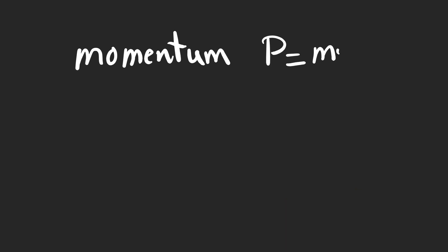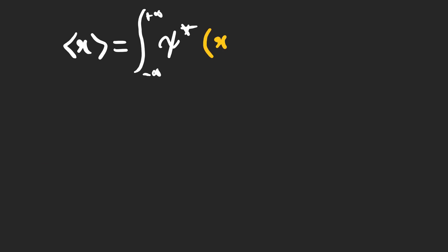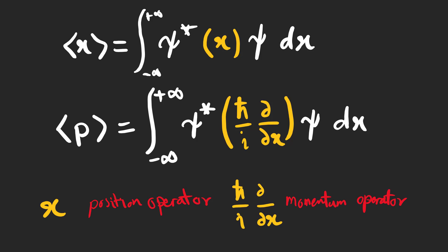In quantum mechanics, it is more usual to work with momentum than velocity. The expectation value of the momentum is given by this expression. The expectation values of x and p can be written like this. In this notation, we have operators that represent position x and momentum.